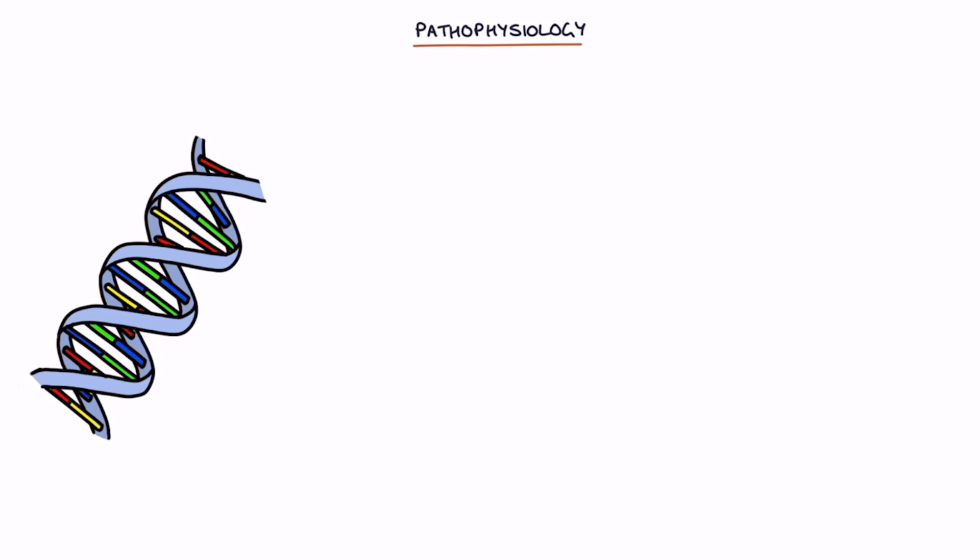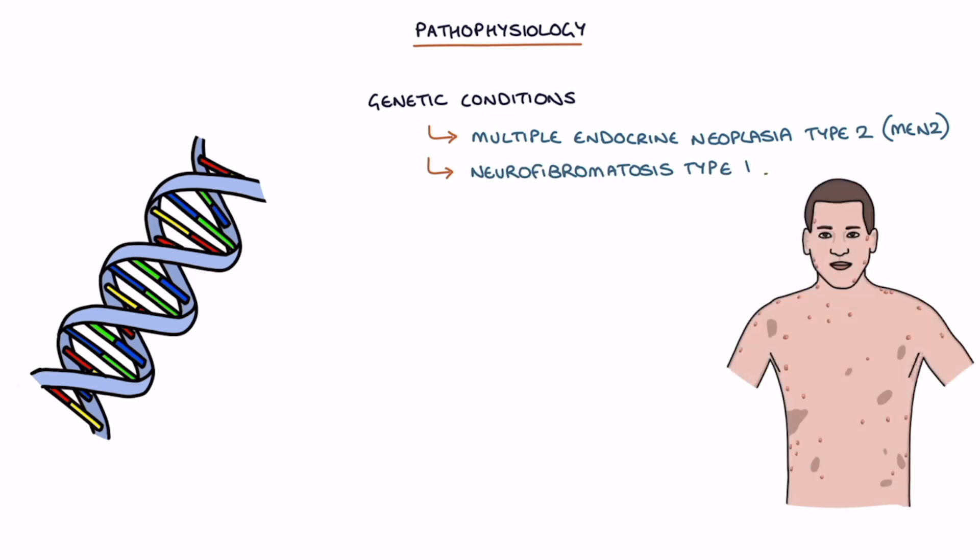Pheochromocytomas are more common in certain genetic conditions, specifically multiple endocrine neoplasia type 2 or MEN2, neurofibromatosis type 1, and von Hippel-Lindau disease. About 30 or 40% of patients with a pheochromocytoma have a genetic cause.